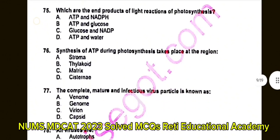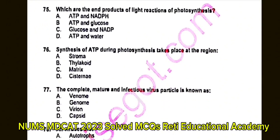Question number 76: Synthesis of ATP during photosynthesis takes place in? A. Stroma. B. Thylakoid. C. Matrix. D. Cristae. The correct answer is B: Thylakoid.